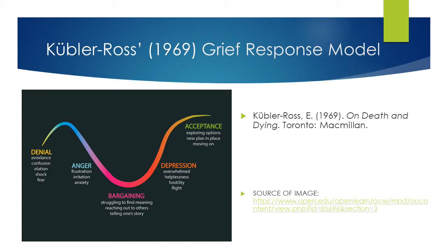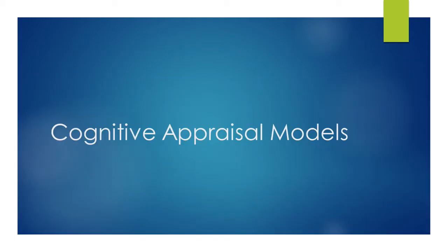For example, one person may be totally devastated by an injury, whilst another person with the same injury who has been underperforming recently may see the injury as an escape from or an excuse for that poor performance. Such an athlete is unlikely to demonstrate a period of depression because they may actually be quite happy about being injured. Due to these limitations, cognitive appraisal models have come to be more widely accepted as models of psychological response to sports injury.